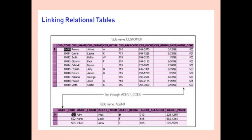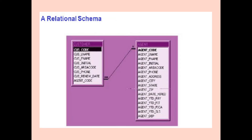In this diagram, there are two tables which are related by the relational database model. Both the tables have a common field known as agent code, so they are related by the agent code field. This diagram shows the relational schema — there are two tables, customer and agent, and both the tables are related by agent code.